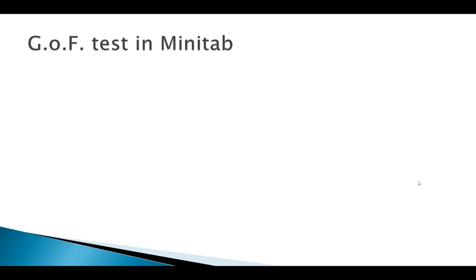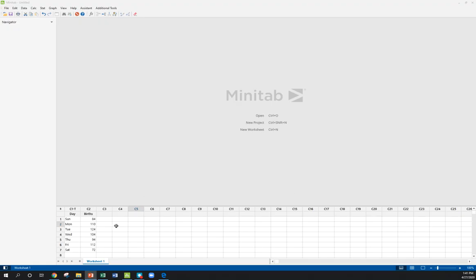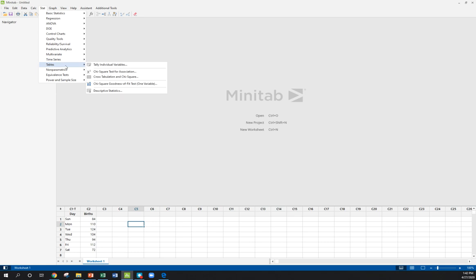Let's look at how to do this in Minitab. I've already got my data here in Minitab. If we go here to Stat, we've got to go to Tables. Here we see a couple chi-squared tests. Just make sure you're not looking here at chi-squared test for association - that's another test we'll talk about in the future.